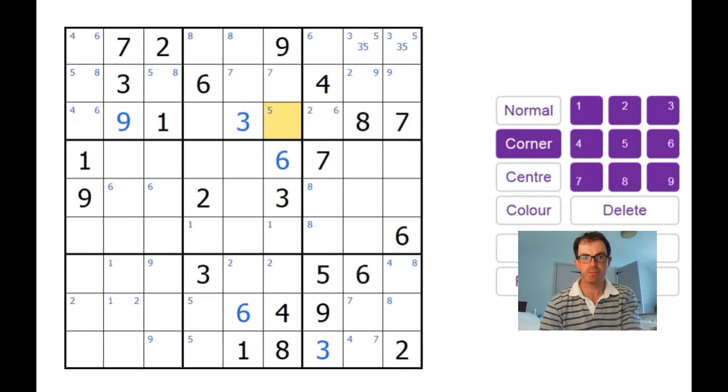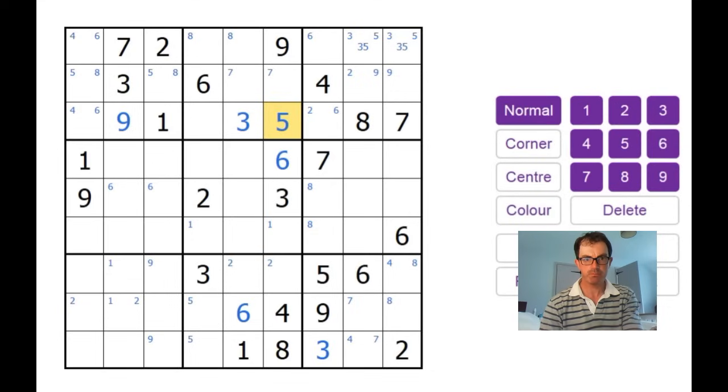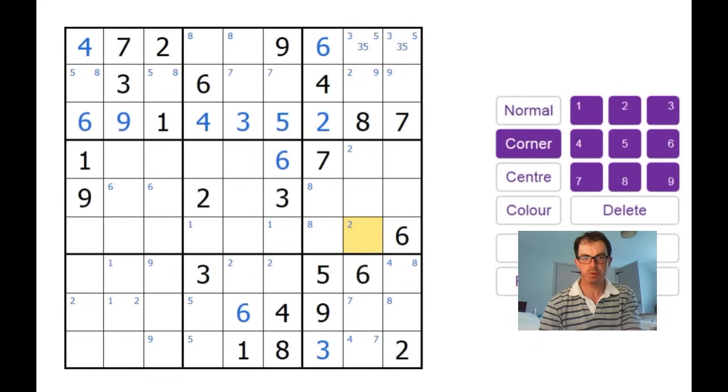We've managed to pencil mark fives into one of these two positions. Well, this position can no longer be a five. There must be a five here. And now we've got six digits in effect in row three. We're looking to place the numbers two, four, and six. Now, let's ask ourselves, what can this square be? Well, it can only be a four because there's already a six and a two in the column. So this is a four. That gives us a four and a six here. Which means this is a six. This is a two. And suddenly, we're looking like we're making more progress.